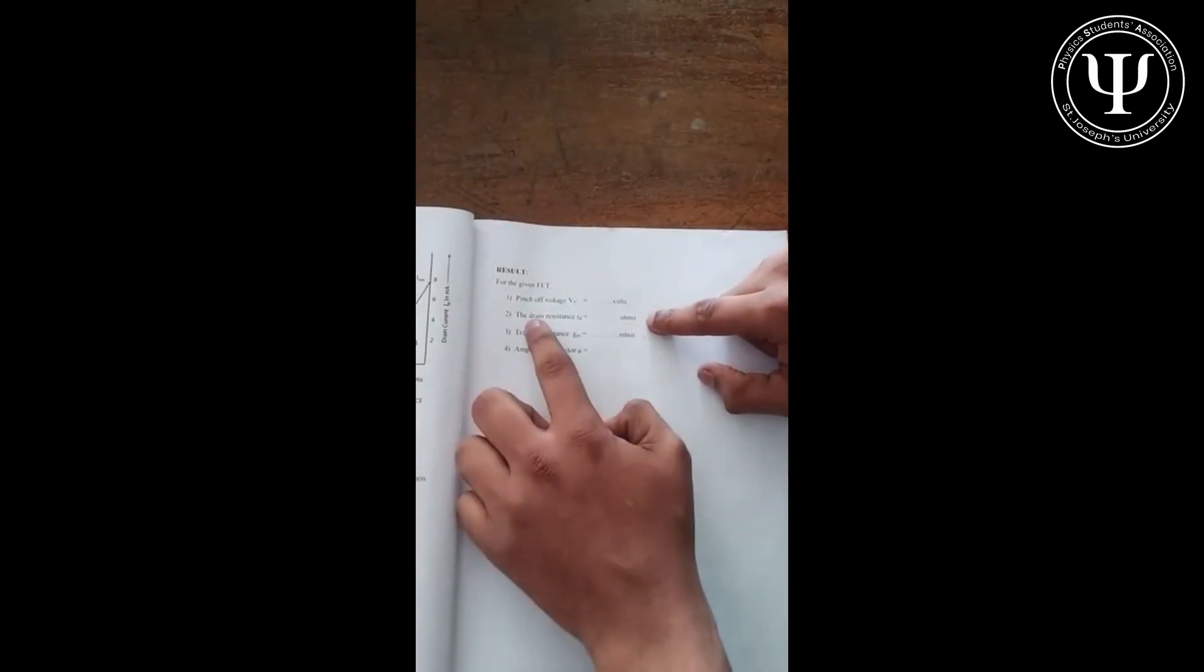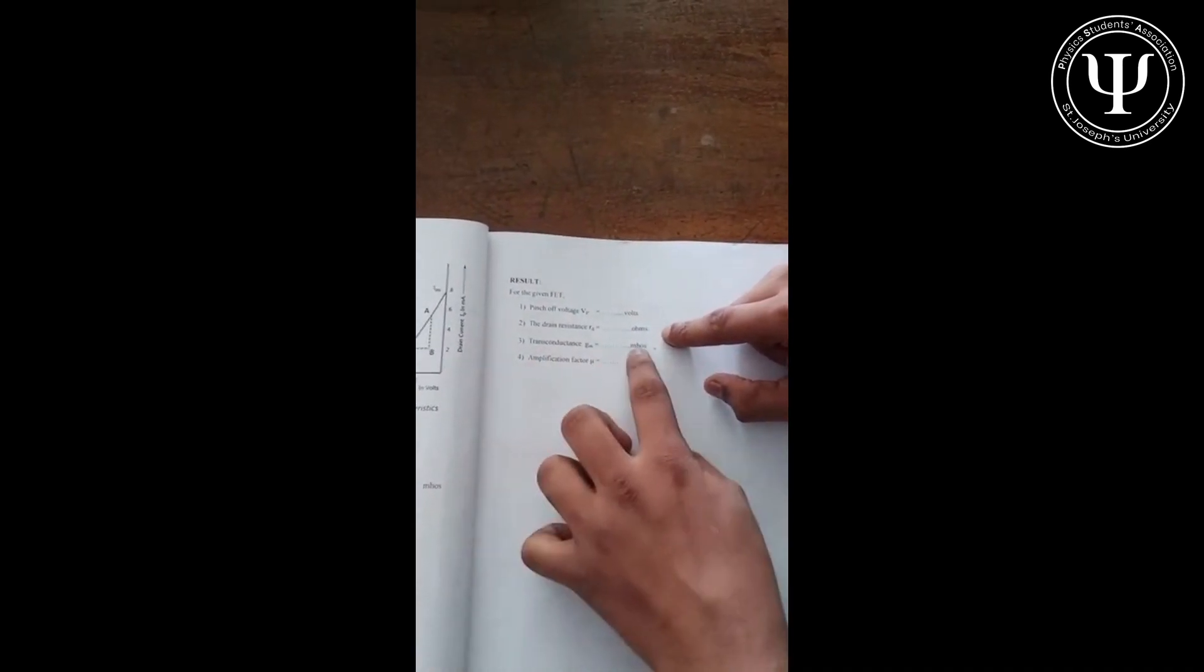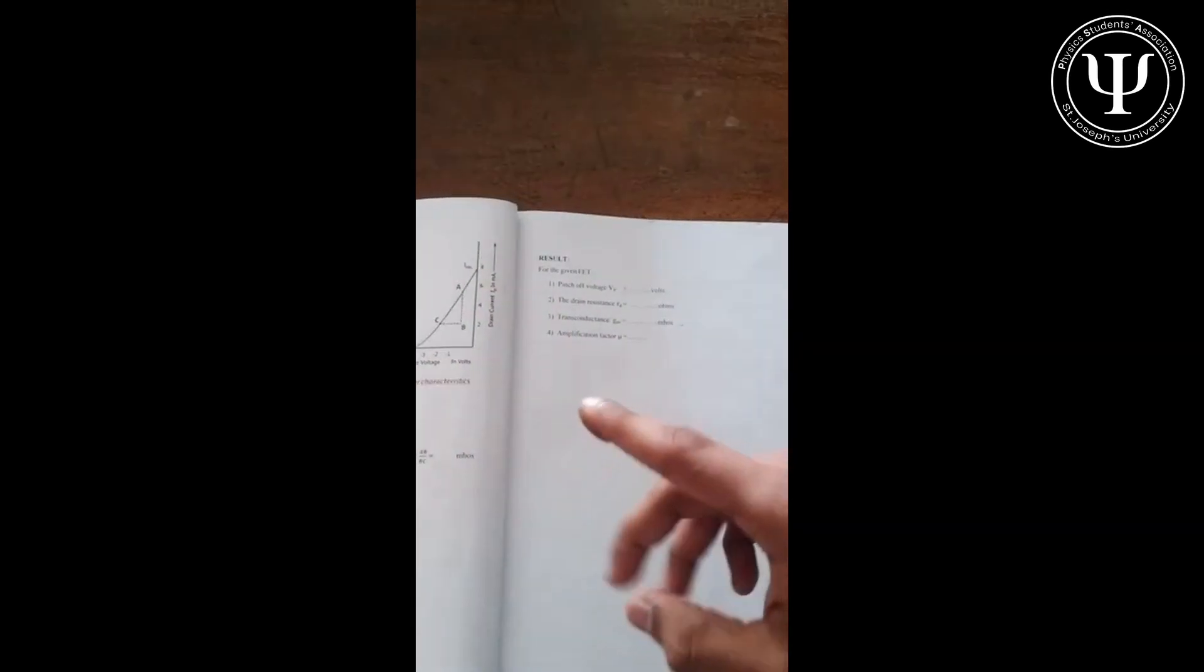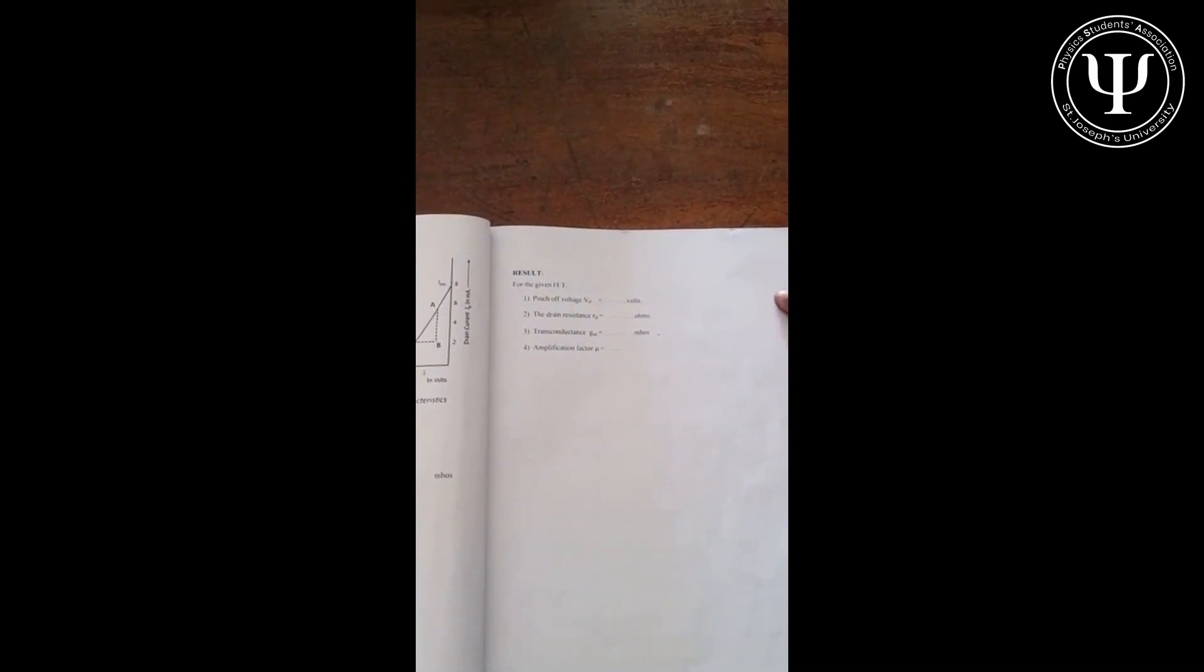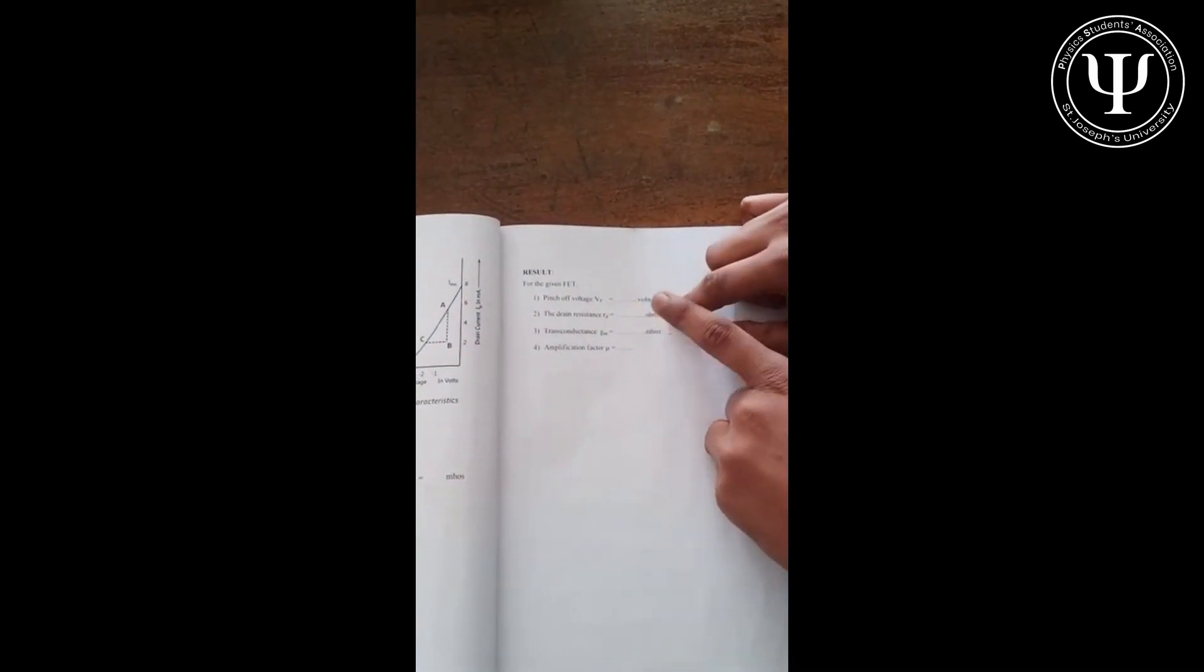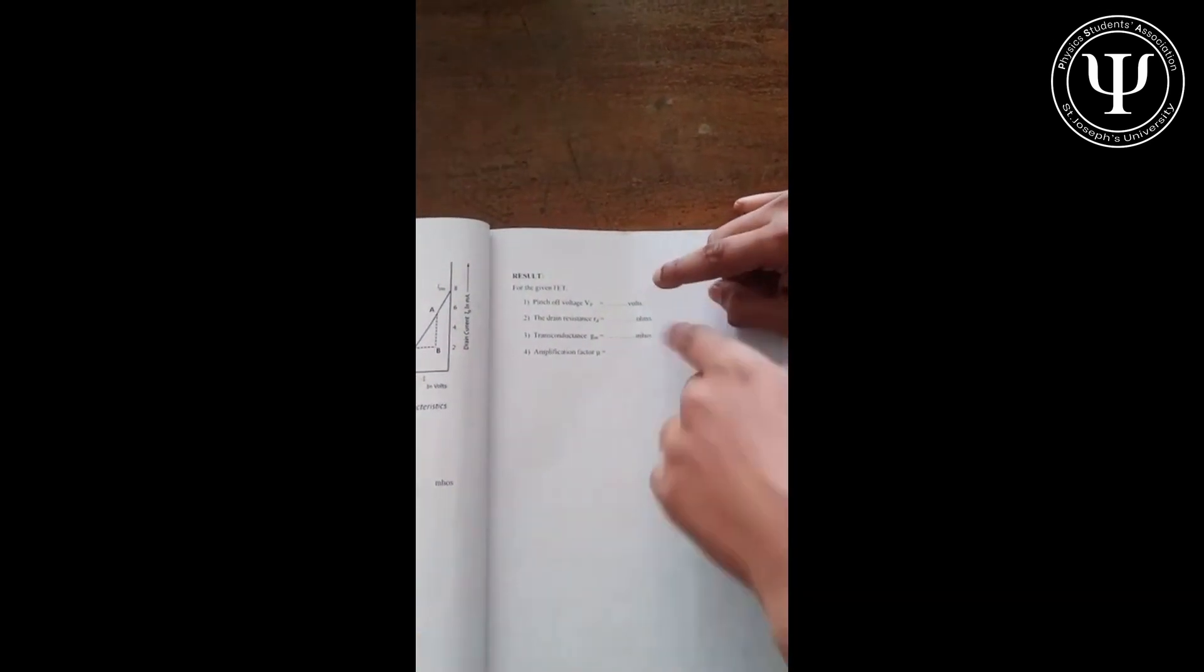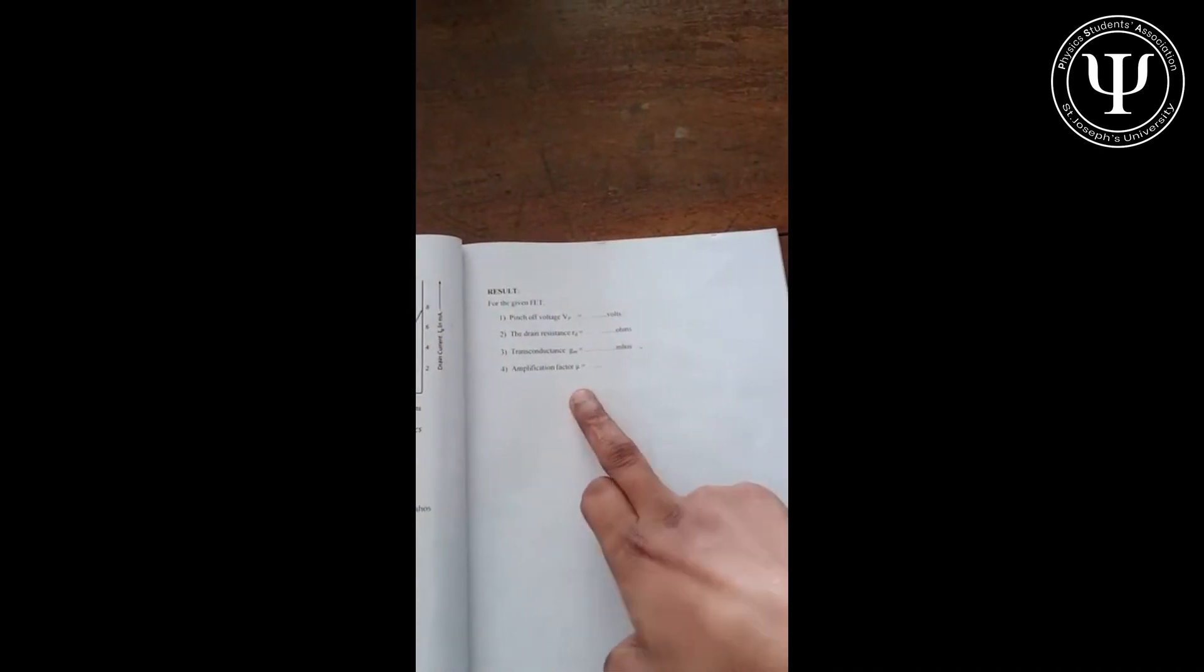So pinch-off voltage is in volts, obviously. Drain resistance is in ohms, you know, obviously. Transconductance is in mhos. Because you're taking an I versus V graph, you get it in ohm inverse, so conductance is basically a moment, so it's in mhos. Amplification factor μ has no unit because it's the multiplication of both resistance and conductance, so mhos and ohm literally gives you one. So there is no unit for amplification factor. And that's the end of this experiment.